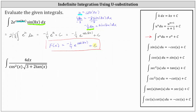Now looking at our second example, we have a choice of letting u equal cosine x or u equal three plus two tangent x. If u is equal to cosine x, then differential u is equal to negative sine x times dx, and we don't have a sine function as part of the integral. If we let u equal three plus two tangent x, differential u is equal to two secant squared x dx. We don't have secant squared either, but remember, four divided by cosine squared x is equal to four secant squared x, because one divided by cosine x is equal to secant x. So let's rewrite the given integral as the integral of four secant squared x divided by the quantity three plus two tangent x raised to the power of one-half, and we still have dx.